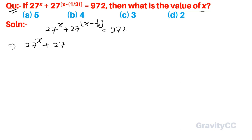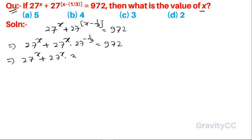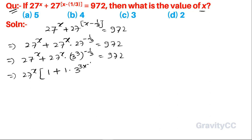This implies that 27 to the power x plus 27 to the power x into 27 to the power minus 1 upon 3 equals 972. This implies 27^x plus 27^x into 3 to the power 3 into minus 1 upon 3 equals 972. Taking 27^x as a common factor, we get 1 plus 1 into 3 to the power 3 into minus 1 upon 3.